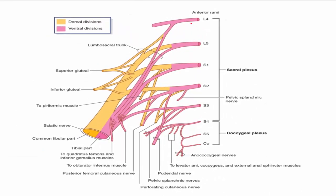Summary of the sacral plexus and its branches: first the roots, then branches including the superior gluteal nerve, inferior gluteal nerve, nerve to quadratus femoris, nerve to obturator internus, the sciatic nerve, posterior cutaneous nerve, and the pudendal nerve.